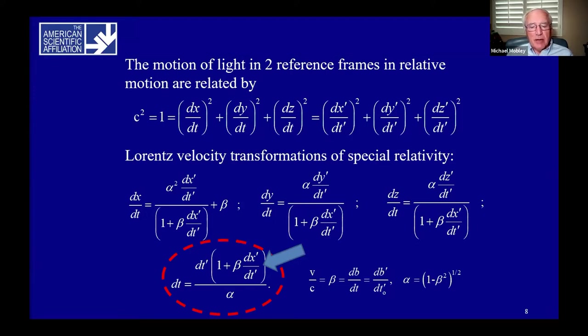Einstein demonstrated that a change in position or motion in one reference frame is transformed into a change in time in another. This radical new insight comes from the differential marked by the blue arrow, the motion in the primed frame. From this, we see that space and time are therefore inextricably connected in a four-dimensional space-time.